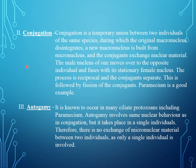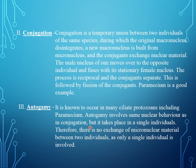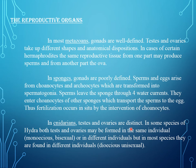The second pattern is conjugation. Conjugation is a temporary union between two individuals of the same species during which the original macronucleus disintegrates. A new macronucleus is built from the micronucleus and the conjugants exchange nuclear material. The male nucleus of one moves over to the opposite individual and fuses with its stationary female nucleus. The process is reciprocal and then the conjugants separate, followed by fission of the conjugants. Paramecium is a good example. The third is autogamy, known to occur in many ciliate protozoans including Paramecium. Autogamy involves the same nuclear behavior as in conjugation but takes place in a single individual; therefore, there is no exchange of micronuclear material between two individuals.